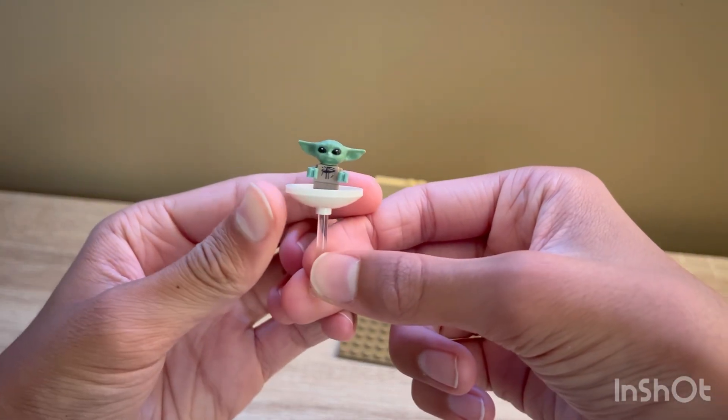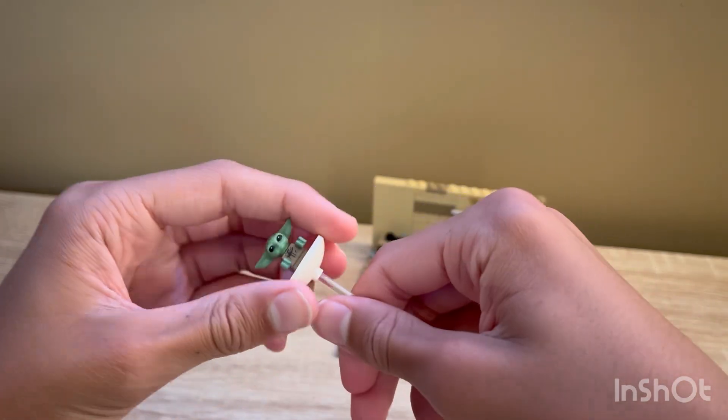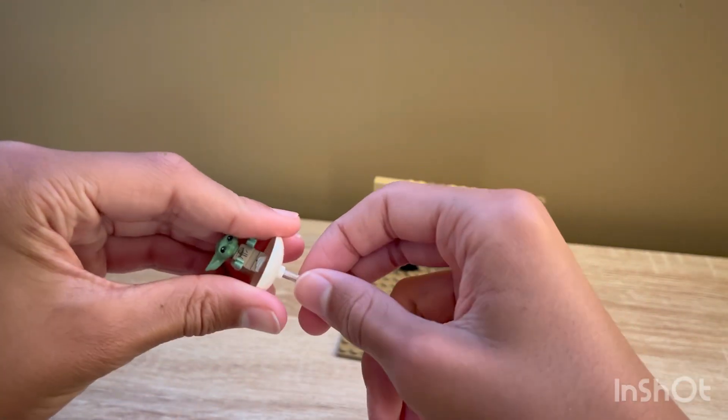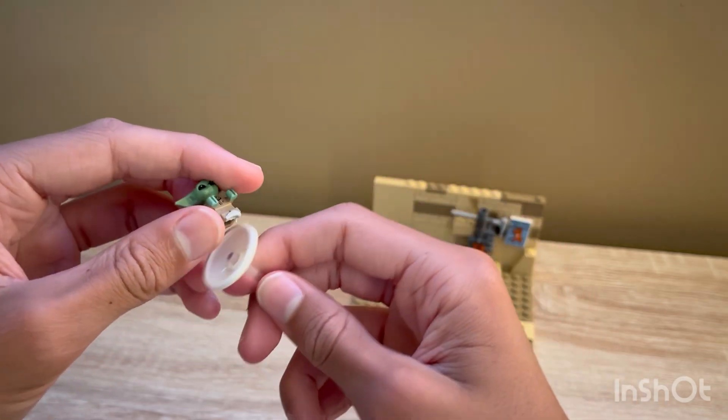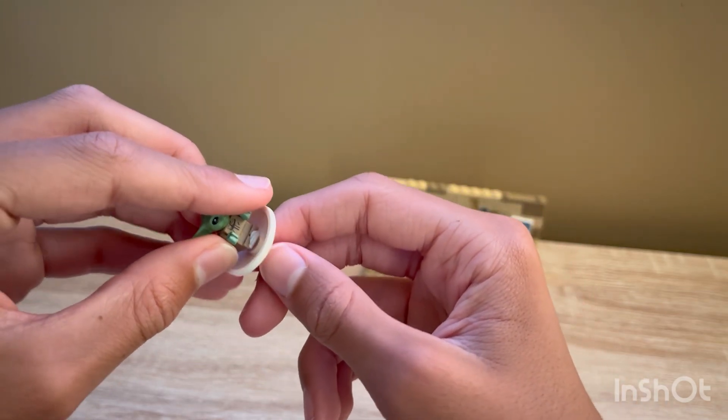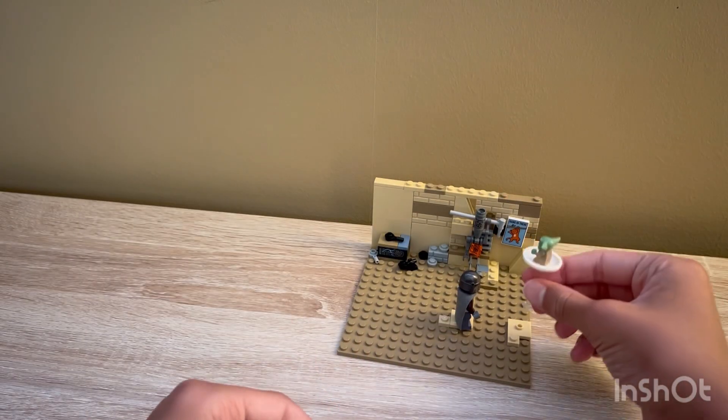I wanted to build the pram that Baby Yoda is in, so I used this clear rod as well as an upside down white dish piece and added a little bit of sticky tack to Yoda and attached him to the pram.